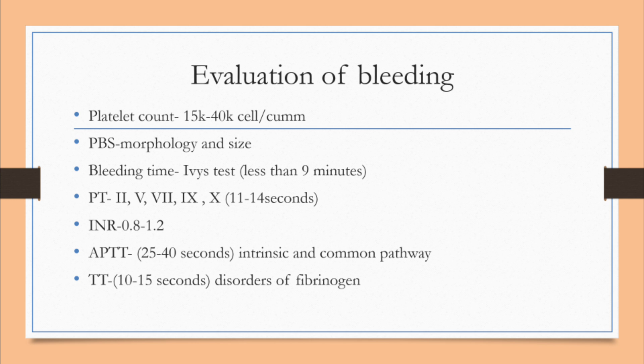INR is the ratio of the test to control prothrombin time. Normally the INR is 0.8 to 1.2, and if elevated it indicates deficiency of clotting factors. APTT checks the intrinsic pathway and common pathway, with a normal value of 25 to 40 seconds. Thrombin time is relevant in disorders of fibrinogen; normal thrombin time is 10 to 15 seconds.